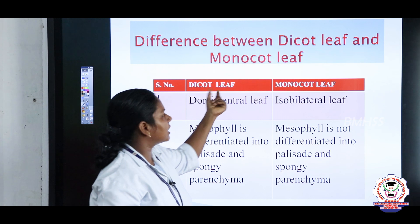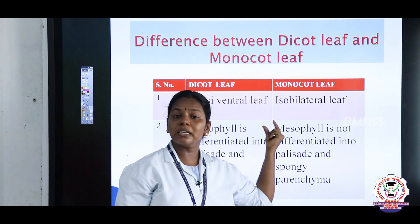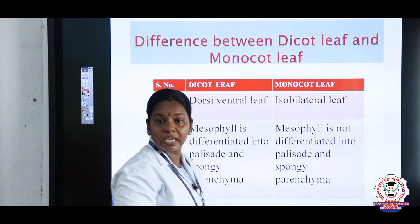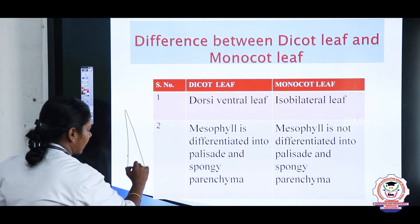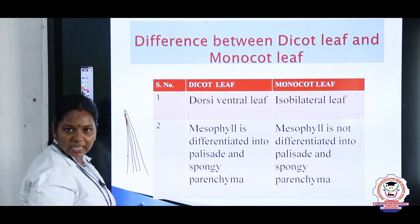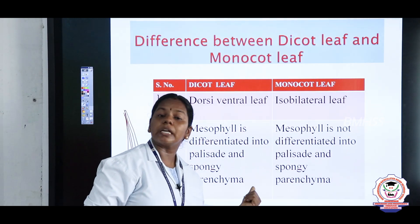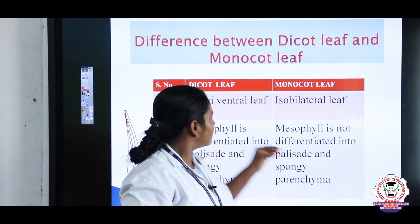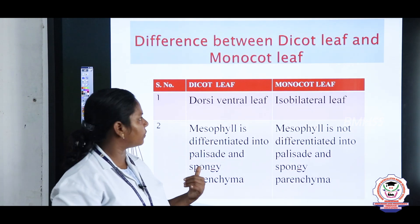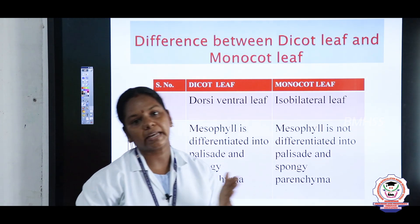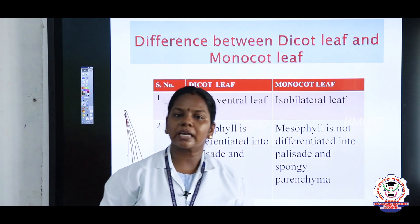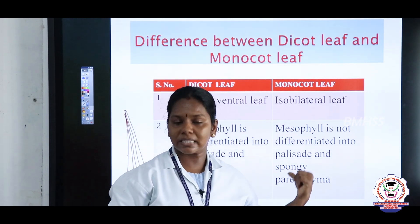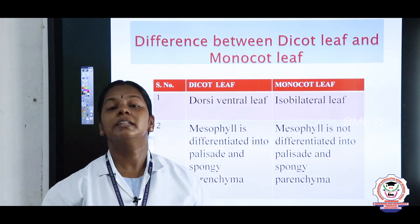The differences between the dicot leaf and monocot leaf: the dicot leaf is dorsiventral — we can differentiate the dorsal and ventral surfaces — while the monocot leaf is isobilateral with parallel venation, as seen in grass and paddy. In the dicot leaf, mesophyll is differentiated into palisade and spongy parenchyma, but in monocot leaf the parenchyma is not differentiated. Go through these topics, practice the diagrams well, and take down the notes and differences. Study material, question bank, and assessment are attached. Parents, please help your children with their homework. Thank you and have a nice day.